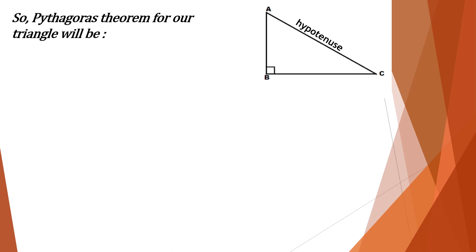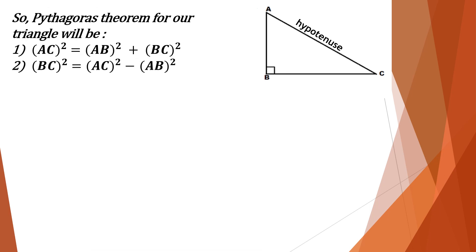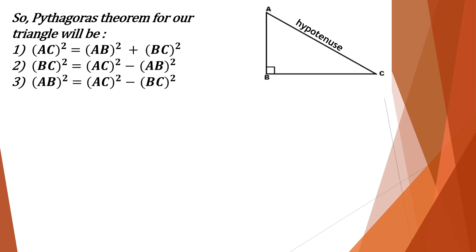The theorem for our triangle gives three formulas: Number 1, AC² = AB² + BC². AC is our hypotenuse; AB and BC are the two sides enclosing the right angle. Number 2, BC² = AC² − AB². Number 3, AB² = AC² − BC².